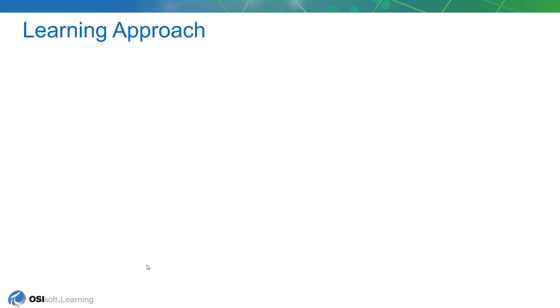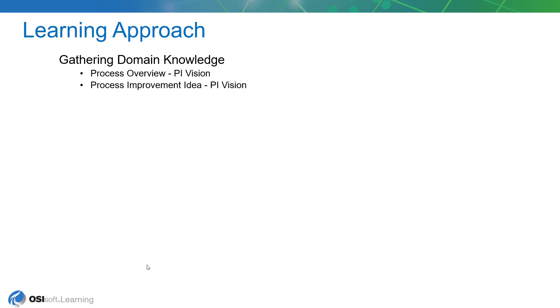The learning approach for this course is based on taking an idea for process improvement and implementing it entirely within the PI System. We'll take you through this process in five lessons, starting with gathering domain knowledge — a prerequisite to everything we do. We're going to show you how the process works using PI Vision, giving you a process overview and then showing you what things will look like after we implement our idea.